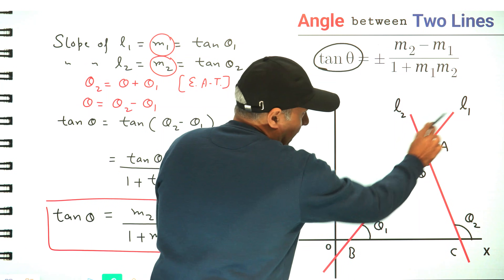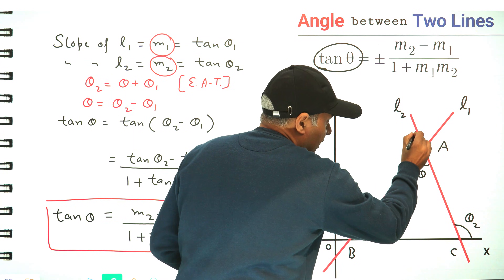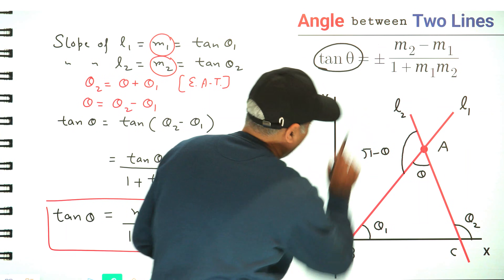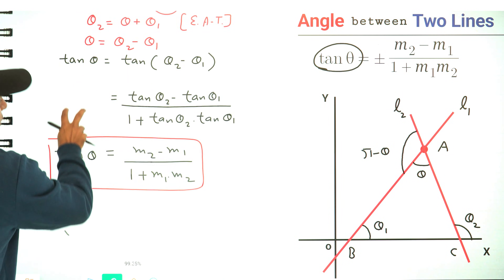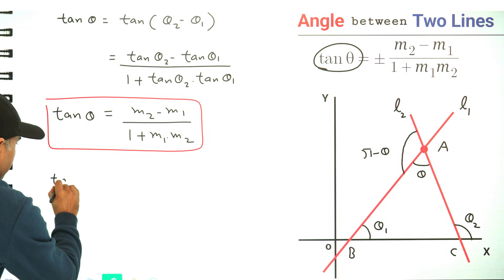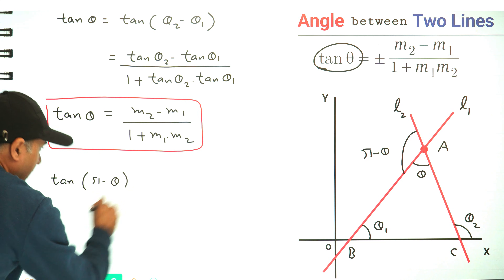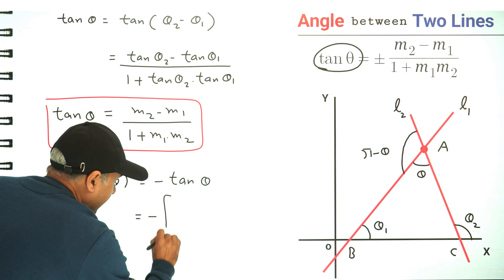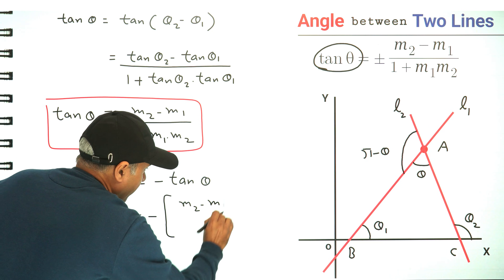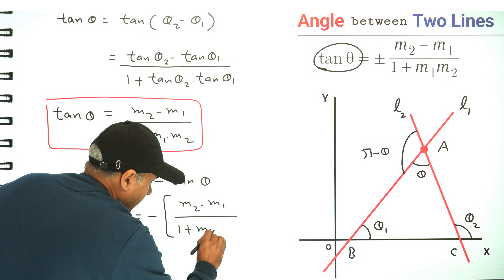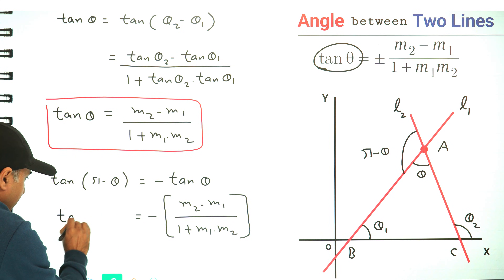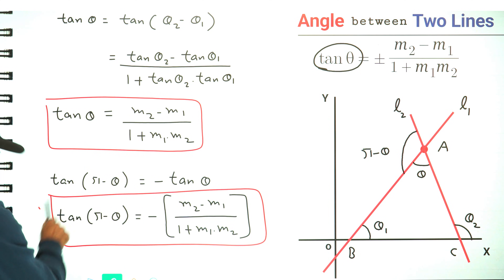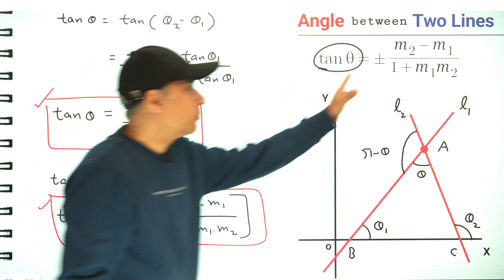Now l1 and l2 are also making one more angle with each other, and that's pi minus theta — if this angle is theta, the other will be pi minus theta because this is a straight line. So we find tan(pi minus theta), which equals minus tan theta. This gives minus of m2 minus m1 over 1 plus m1 times m2. Hence tan(pi minus theta) is one value and tan theta is the other, so overall tan theta is plus minus this expression.